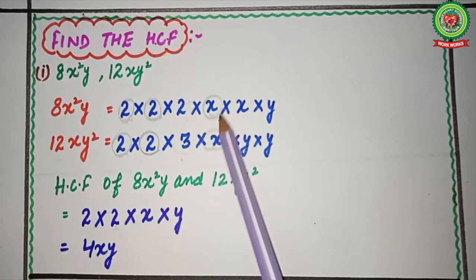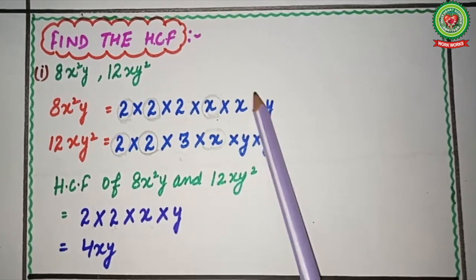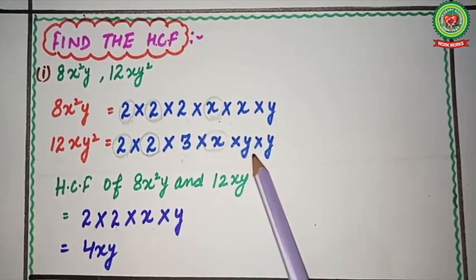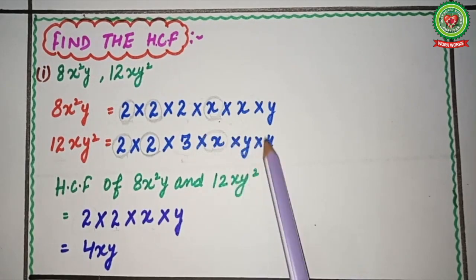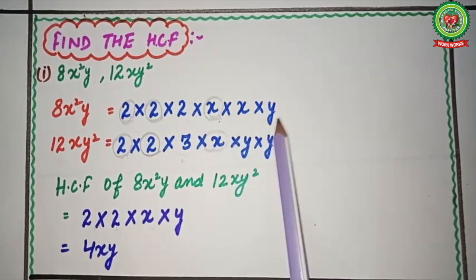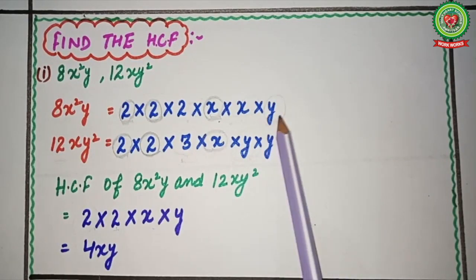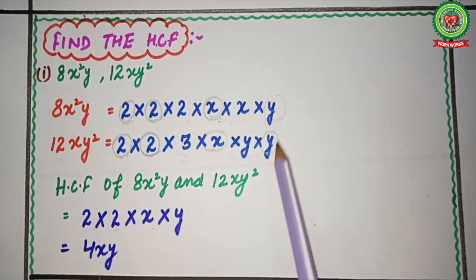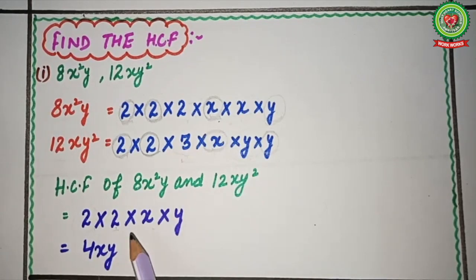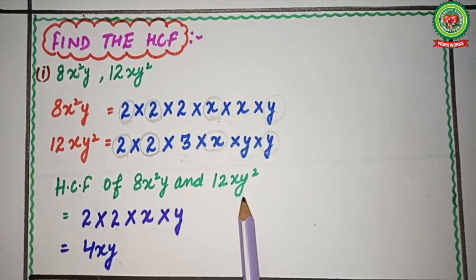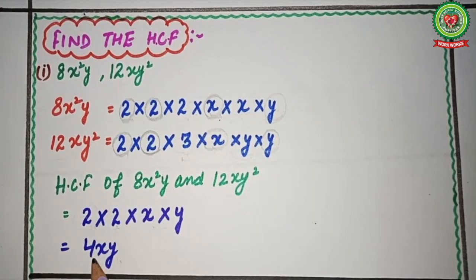Moving to the variables: x is present in both terms, so we circle it and write multiply by x. The second x from x² and y are not common to both terms, so we skip them. However, y is present in both terms, so we write multiply by y. Therefore, the HCF is 2 × 2 × x × y = 4xy. So 4xy is the HCF of 8x²y and 12xy².